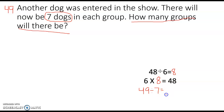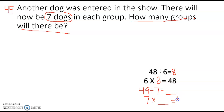We don't know how many groups there will be. We can also look at this using addition: there will be 7 dogs in each group, times we don't know how many groups yet, and that will equal our 49 dogs. So let's make our equal groups of 7 and see how many groups we make.